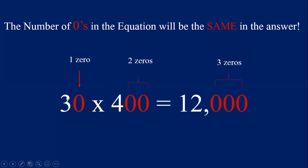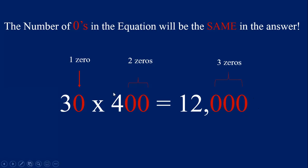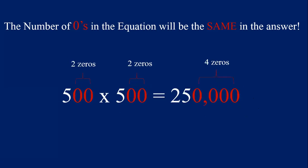Let's try 30 times 400. This might look a little more complicated, but really all you have to know is 3 times 4. 3 times 4 equals 12, so we write 12 first. Count the zeros in the equation: 1, 2, 3 — three zeros. Write three zeros after that 12, and now we know 30 times 400 equals 12,000. We can start to do these in our head — just multiply the non-zero numbers, count the zeros, and put those behind the first answer.